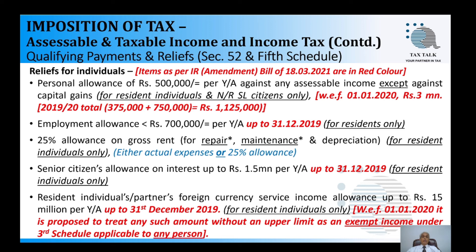There is a 25% allowance on gross rent for repair and maintenance — though the word 'depreciation' also appears in the provision. If actual repair and maintenance expenditure exceeds 25% of gross rent in a given year, you can still claim only 25% without considering actual expenses. It is important to note that any other expenses, such as rates, have no upper limit and can be claimed in full.